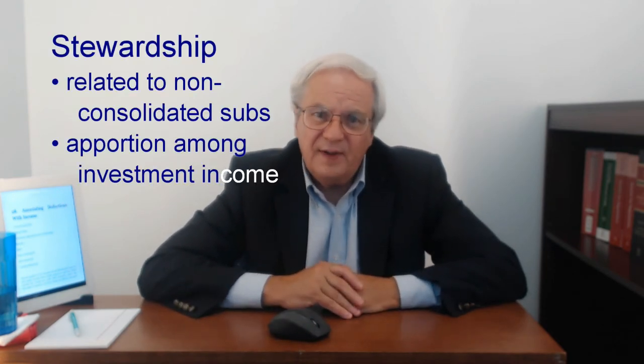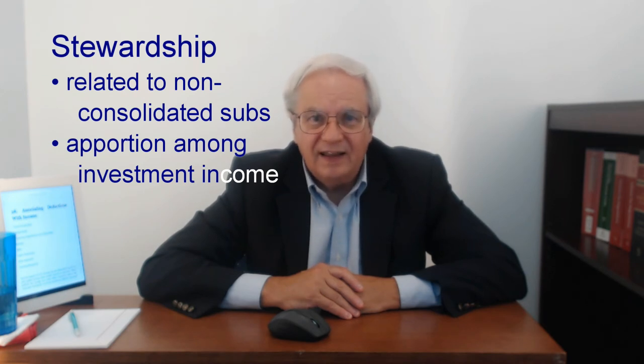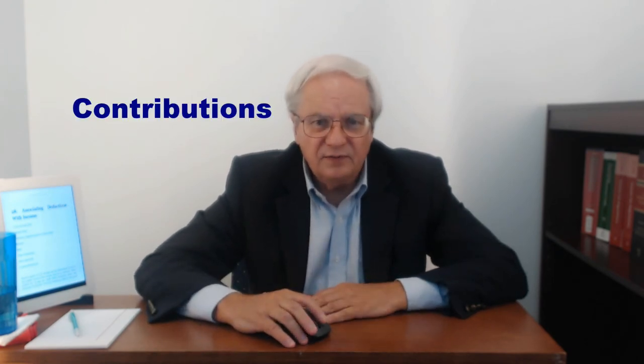Both individuals and corporations may have stewardship expenses — expenses of an investor in managing investments. These expenses must be allocated first to investment income, then apportioned among all investment income based on gross income. State taxes must also be apportioned if the state potentially taxes foreign source income; there are two methods of apportionment that may be used, and both are exceedingly complex. Deductions for charitable contributions are apportioned based on gross income.